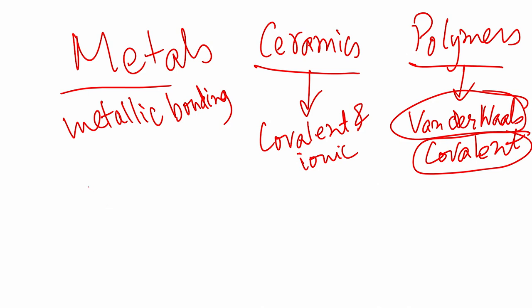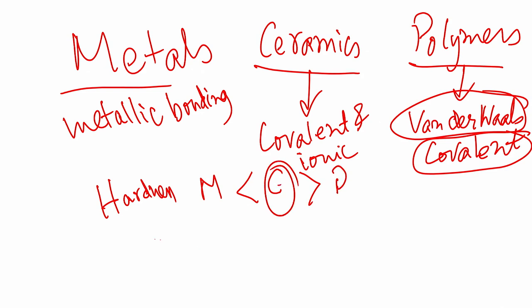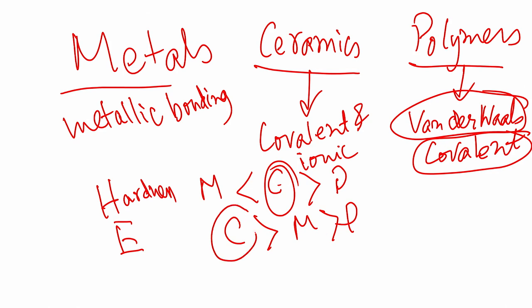Looking at hardness, ceramics are much harder than metals, which are harder than polymers — ceramics are by far the hardest. In terms of elastic modulus, ceramics are greater than metals, which are much greater than polymers. These are some of the reasons ceramics have attracted wider attention in the tribology community — they have much better material properties than metals and polymers.